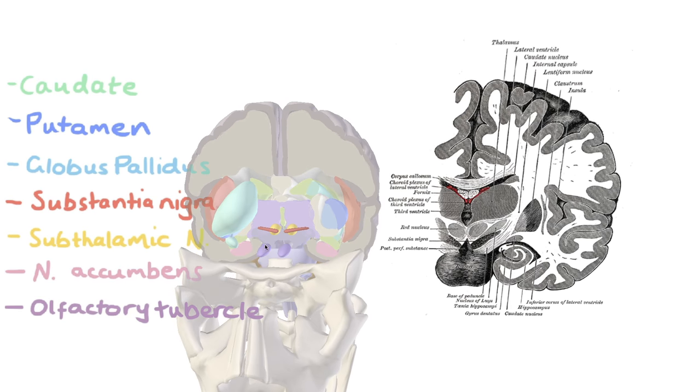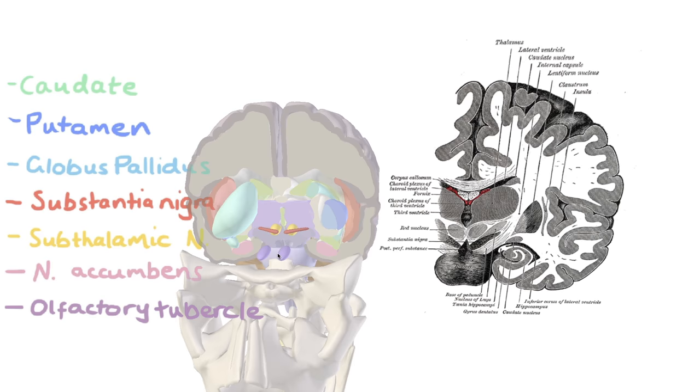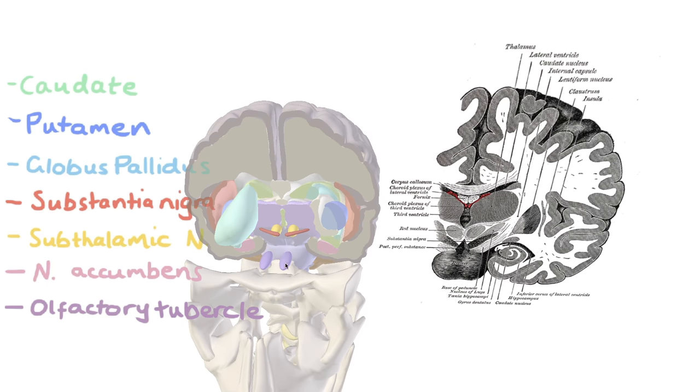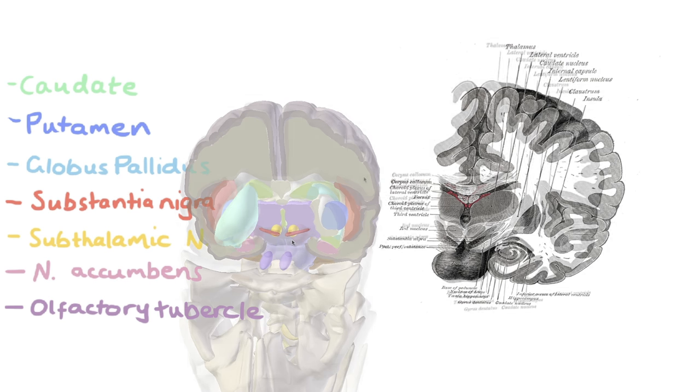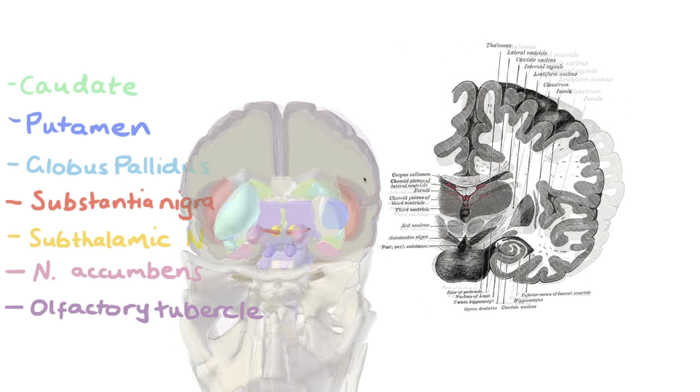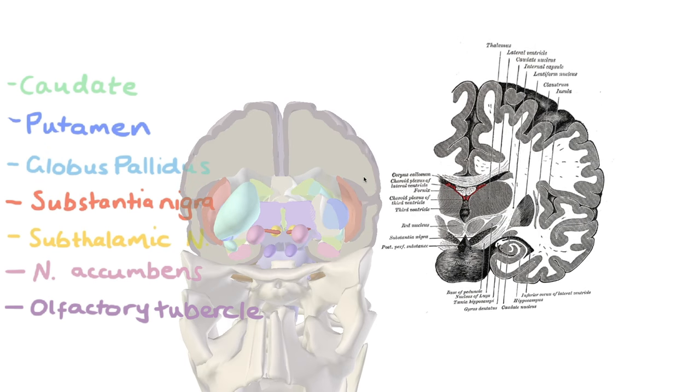We can't see it on this coronal slice because it's too far posterior, but the olfactory tubercle we have up the front here. So the olfactory tubercle and the nucleus accumbens are together called the ventral striatum, as opposed to the dorsal striatum, which is generally referred to as the striatum. So there's the nucleus accumbens.